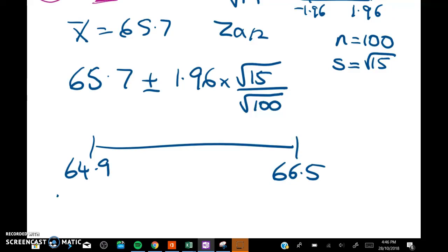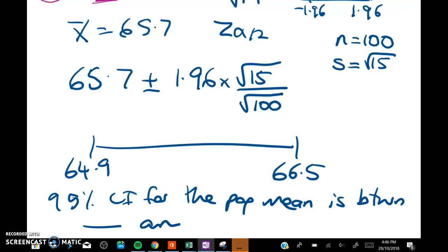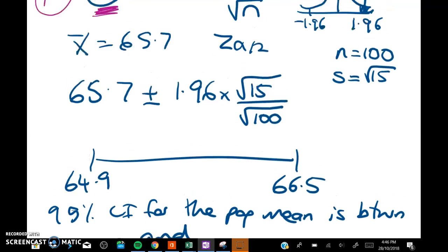We can say a 95 percent confidence interval for the population mean is between those two values. Now let's go back to the question to see the last part and how we interpret that.